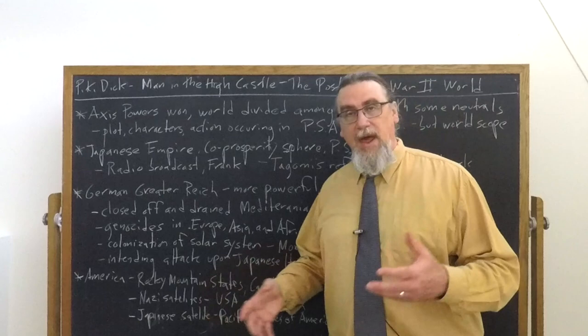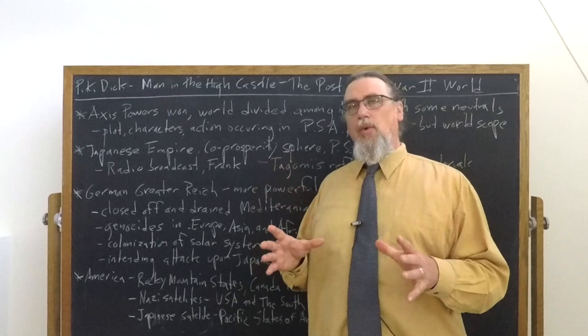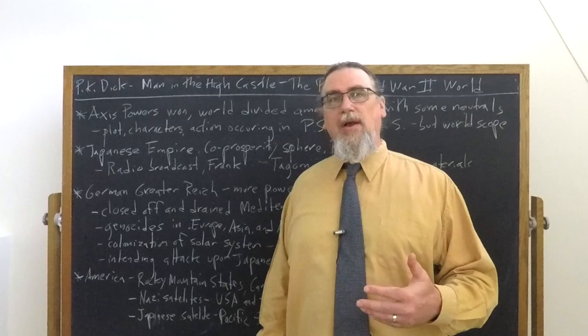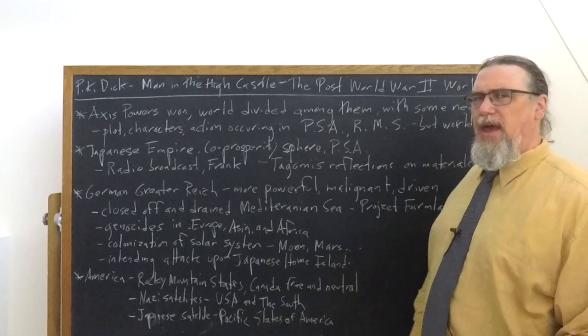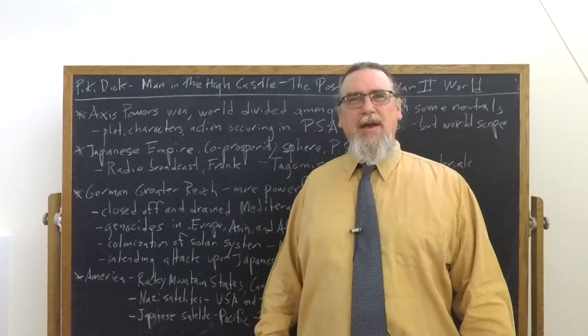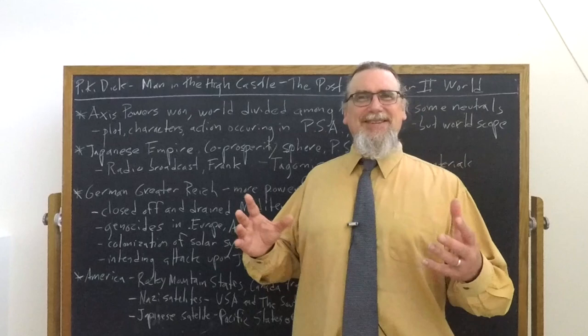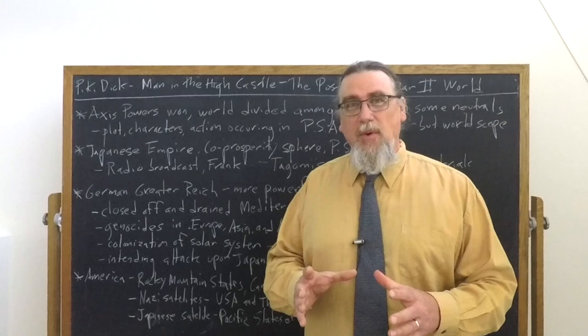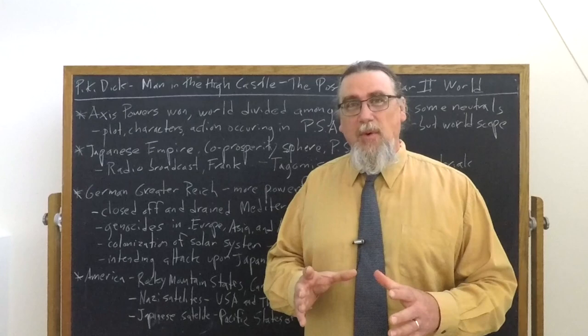There are also Nazi satellites. The United States of America — essentially the North — has been re-industrialized. Slavery of black people has been reenacted in the American South. Canada in some respect is free — Bob Hope is up there making fun of Nazi ideologues such as Goebbels, though it's not really explained. And then we have the Japanese satellite states of the Pacific States of America. That is the setting for this wonderful alternate history novel, Philip K. Dick's The Man in the High Castle.